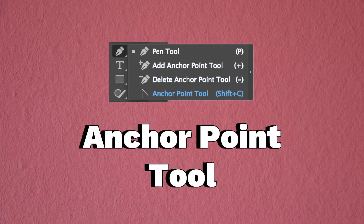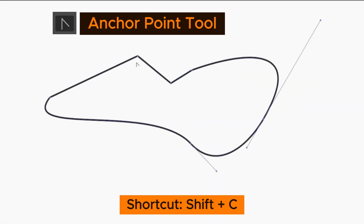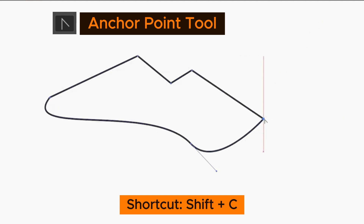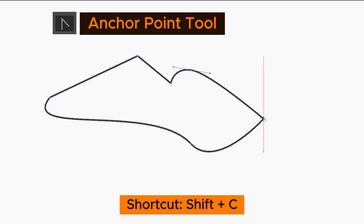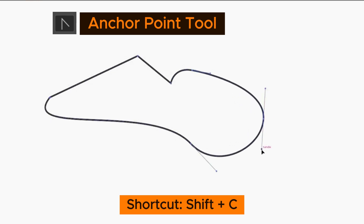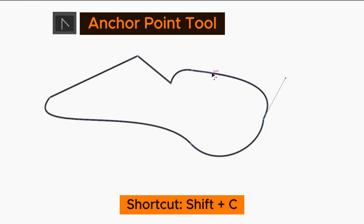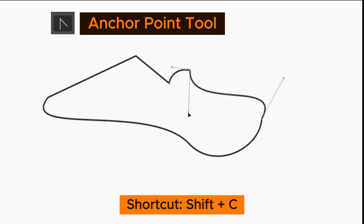The Anchor Point Tool — shortcut is Shift C. Used to add, remove, or edit handles on an anchor point. Clicking on a curved anchor point removes the handles, and clicking and dragging adds them back. Dragging a handle with this tool will move it independently of the other one.